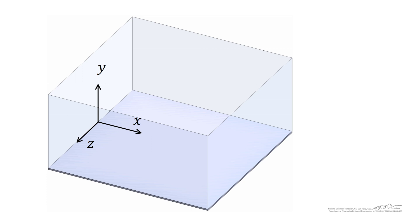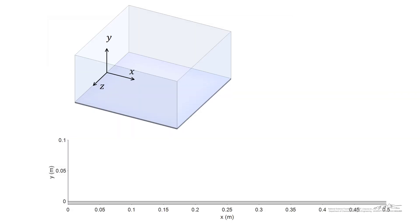We're also going to assume that y is infinite above the surface of the plate. If we look at the axes from the side, we've got the x coordinate and the y coordinate shown here, where the surface of the plate is shown at a value of y equals zero.